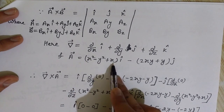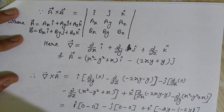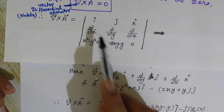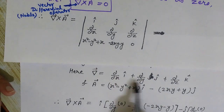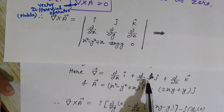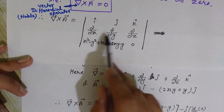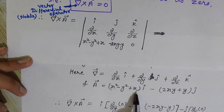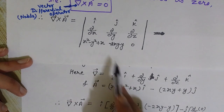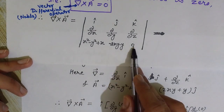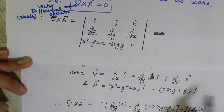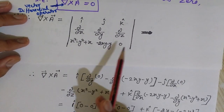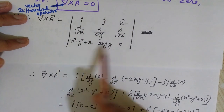In the same way, for our curl calculation, we arrange the determinant with î, ĵ, k̂ in the first row, then ∂/∂x, ∂/∂y, ∂/∂z in the second row, and in the third row the components of vector A: (x² − y² + x) for the x-component, (−2xy + y) for the y-component, and zero for the z-component since there is no k̂ component.